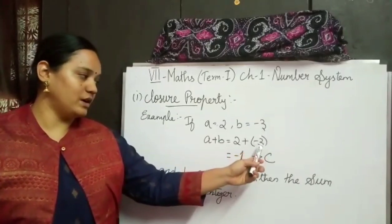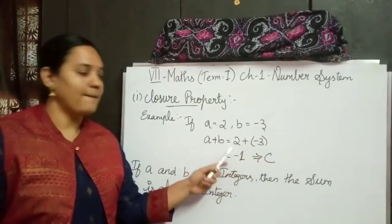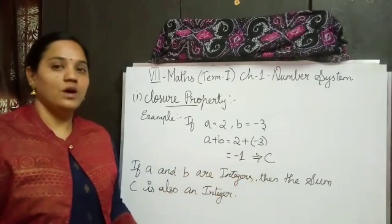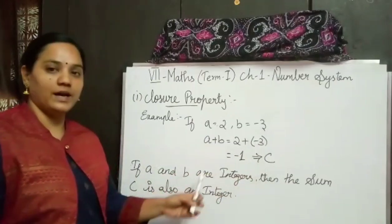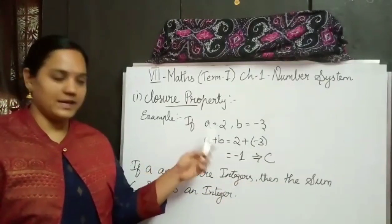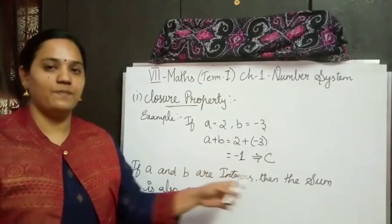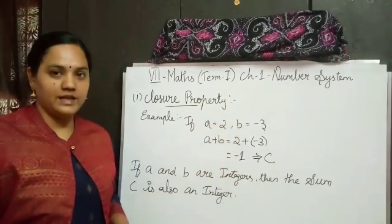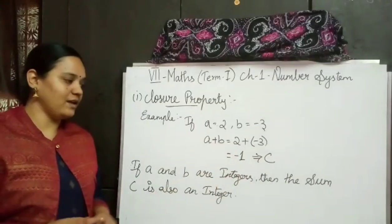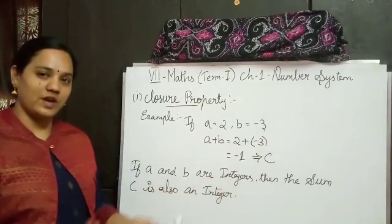3 is the greatest number here. Subtracting 3 and 2 we get 1, and the sign for 3 is minus, so I have written minus for the answer. Adding a and b I got the answer as minus 1, so I am assuming this minus 1 as c. The rule is: if a and b are integers then the sum c is also an integer. You can also say: if a and b are integers then a plus b is also an integer.